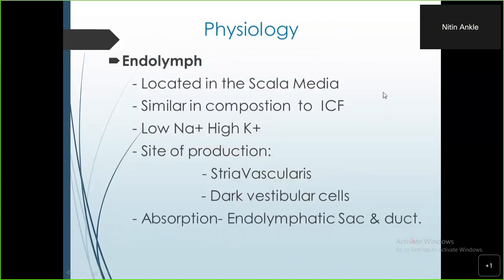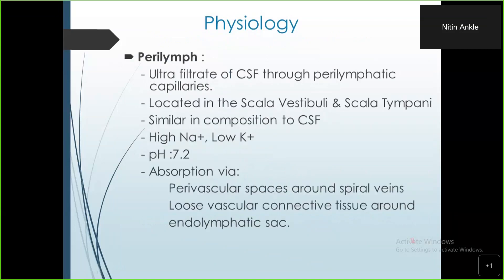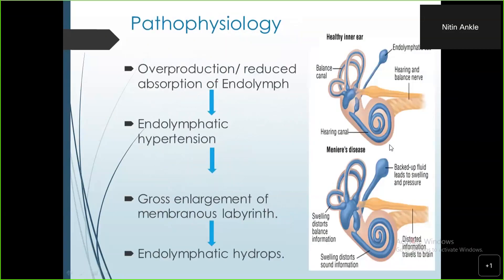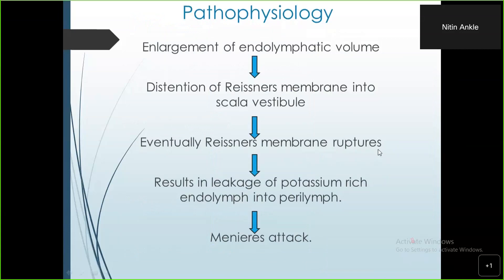We dealt with the inner ear anatomy and physiology, describing the endolymph and perilymph. In short, endolymph is like intracellular fluid, rich in potassium, whereas perilymph is high in sodium and is secreted by the scala vestibuli and stria vascularis. The treatment depends on this pathological phenomenon. The endolymphatic volume increases either due to decreased absorption or increased production, causing stagnation in the scala media.